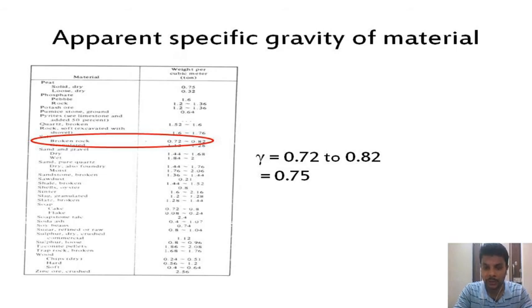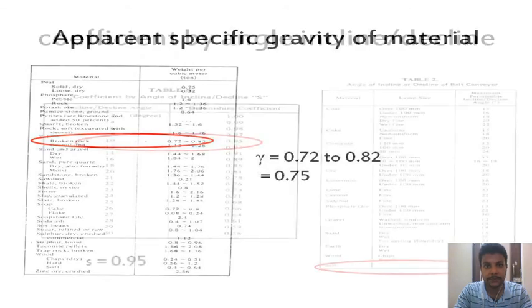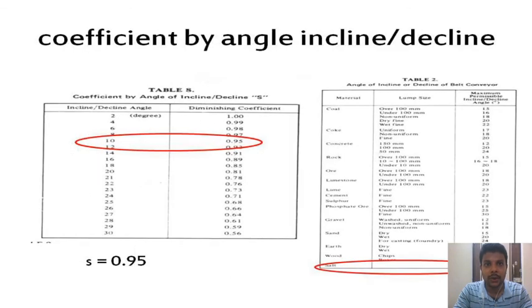The coefficient by angle, whether it is inclined or declined, is in table number two. You can see that the maximum permissible is 10 degrees. The angle of inclination is 10 degrees and the diminishing coefficient which we have found is 0.95.